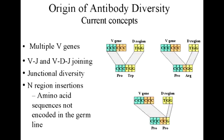Name the four different ways of generating antibody diversity. The first way is through random recombination of VJ, which are the light chains, and VDJ, which are the heavy chain genes. The second way is random recombination of heavy chains with light chains. The third way is somatic hypermutation, and the final way is the addition of nucleotides to DNA during recombination, which is achieved by the enzyme terminal deoxynucleotidyl transferase.